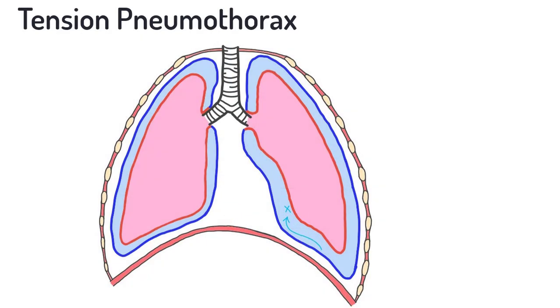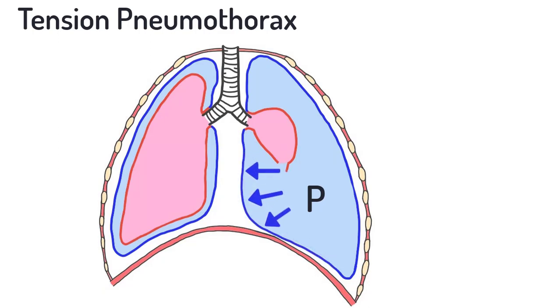With each breath the patient takes, more air is drawn into the pleural space and the pressure builds. Given enough time, pressure can build to the point where it begins to compress mediastinal structures. This will impair venous return to the heart and can result in hemodynamic collapse analogous to cardiac tamponade. Note that while tension can develop in a pneumothorax of any etiology, it more commonly occurs in the setting of traumatic pneumothorax.